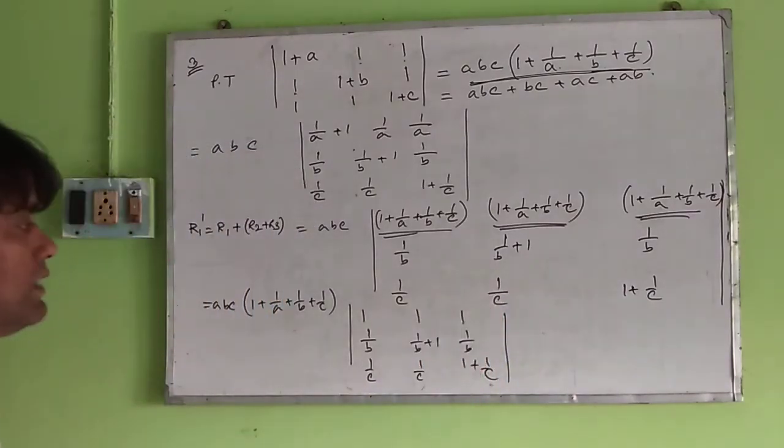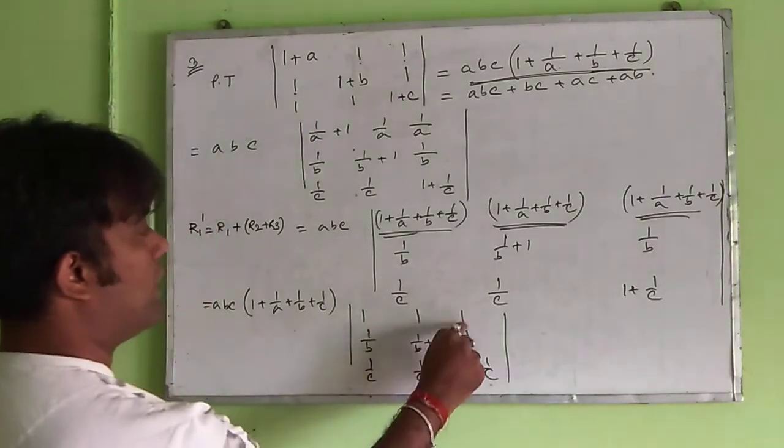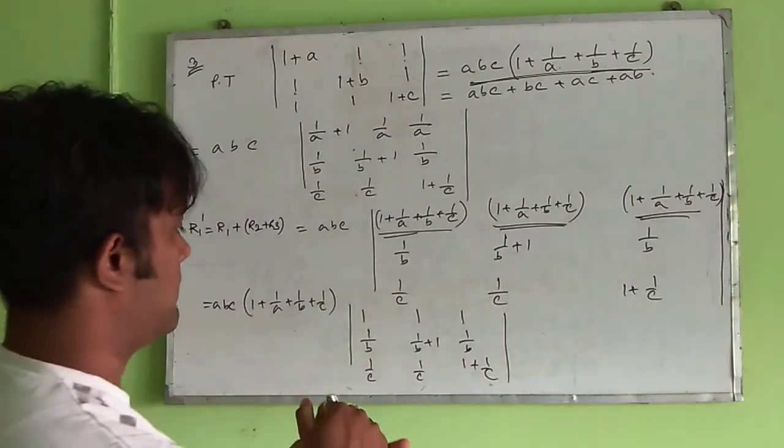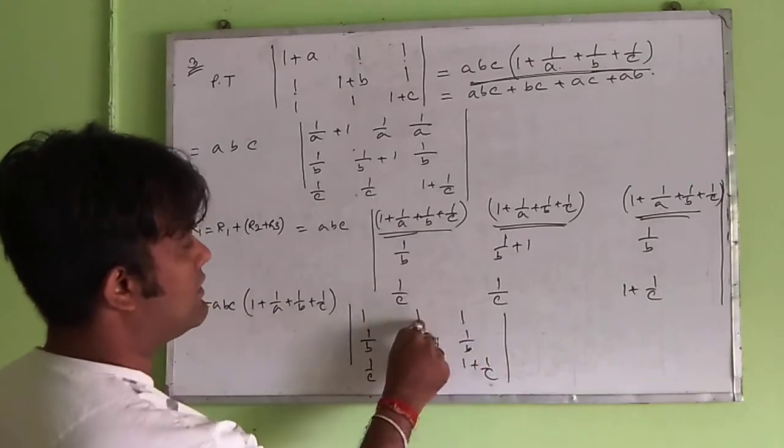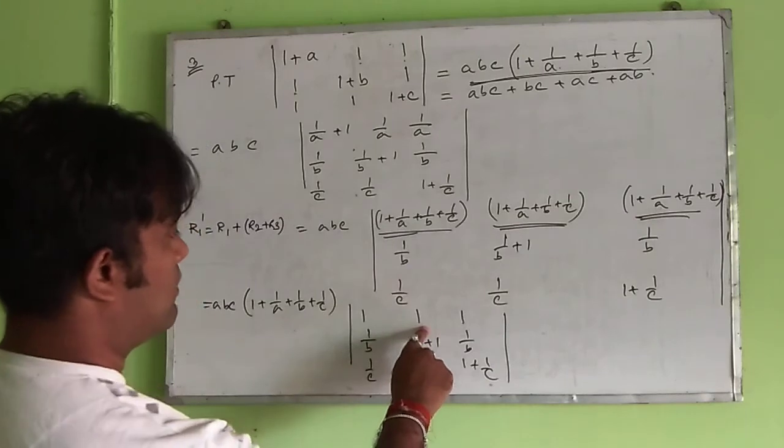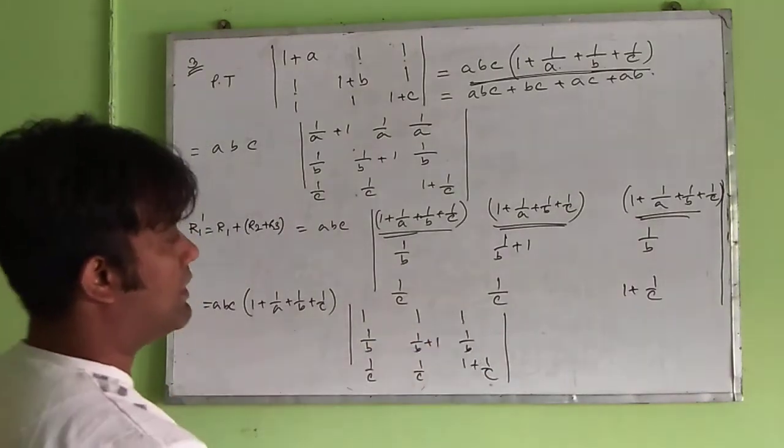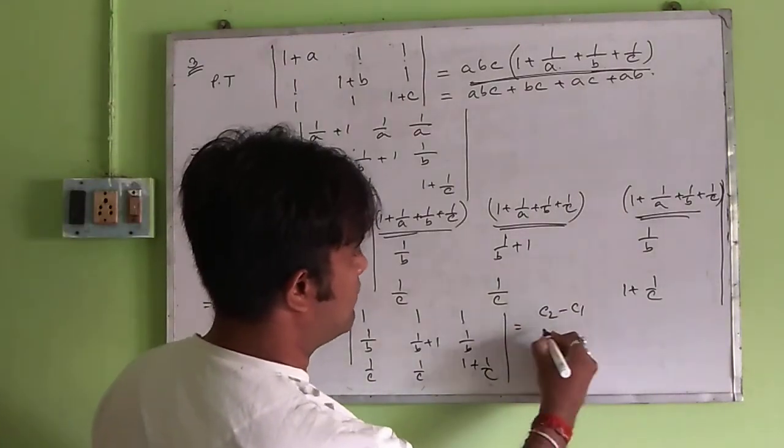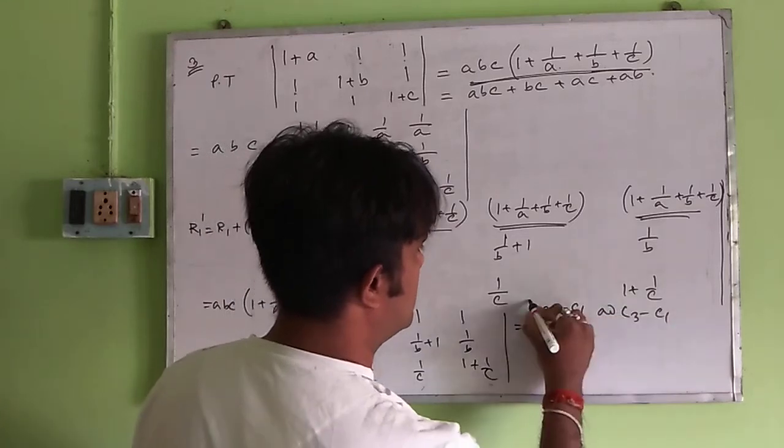Now, it is very clear that there is 1. Like the previous position, we want 0 and 0 in that position. To make it 0, we must do the operation C2 minus C1 and C3 minus C1.